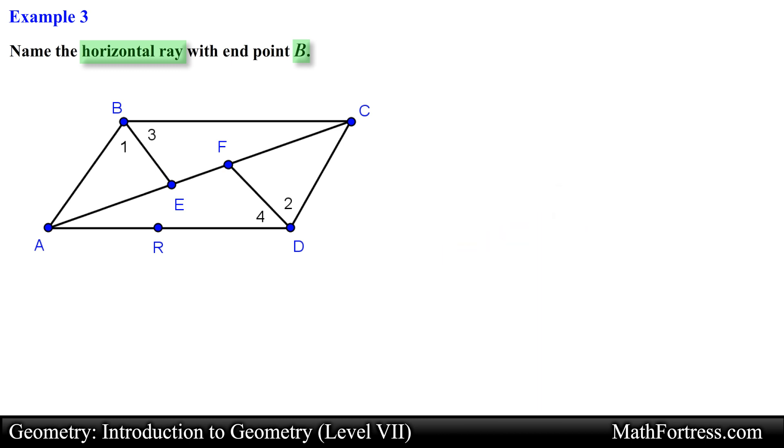You can think of the walls in a room as vertical surfaces since they are upright relative to the floor. For this problem we want to identify a horizontal ray. So if we were to use point B as one endpoint we see that the only horizontal ray that can be formed is ray BC and this is our answer. Let's move along to the next example.